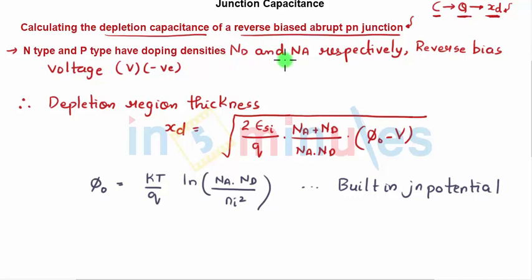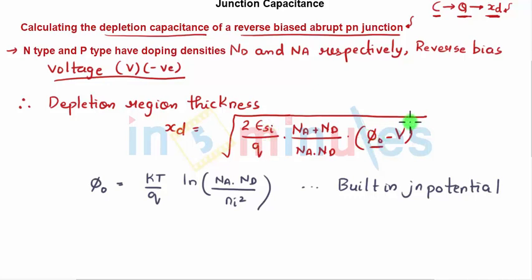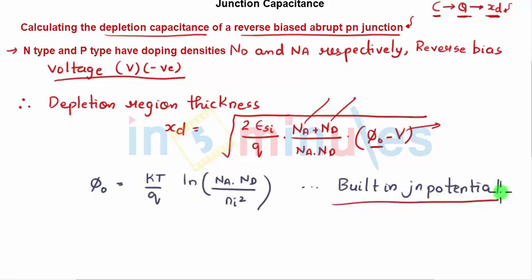The N and P types have their respective doping densities, and the reverse bias voltage is V minus. The depletion region thickness XD is given by: XD = sqrt( 2 × (NA + ND)/(ND × NA) × (φ0 − V) × εSi/Q ), where φ0 is the built-in junction potential given by φ0 = (kT/Q) × ln(NA × ND / ni²). V is the reverse bias voltage, NA is acceptor doping density, and ND is donor doping density.